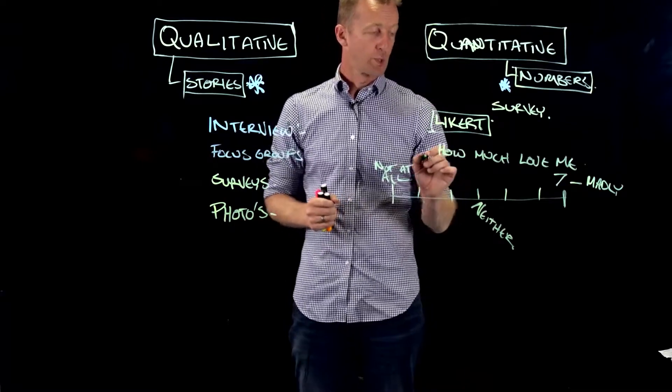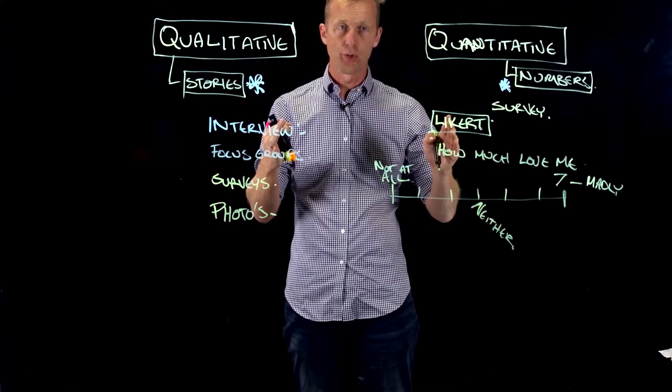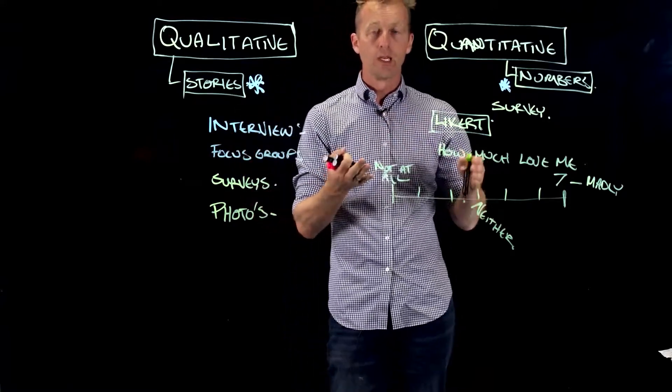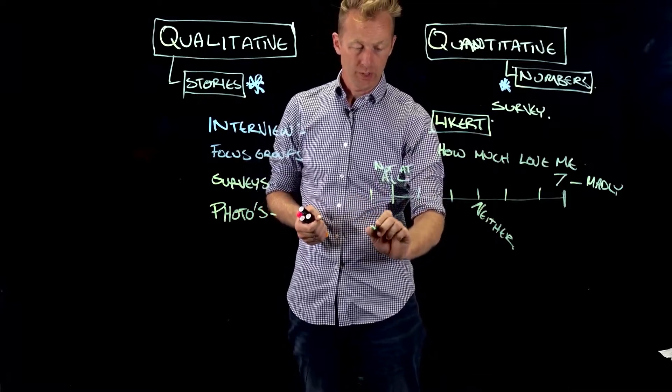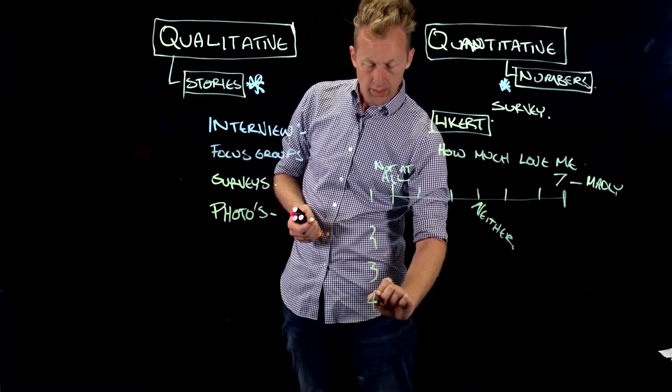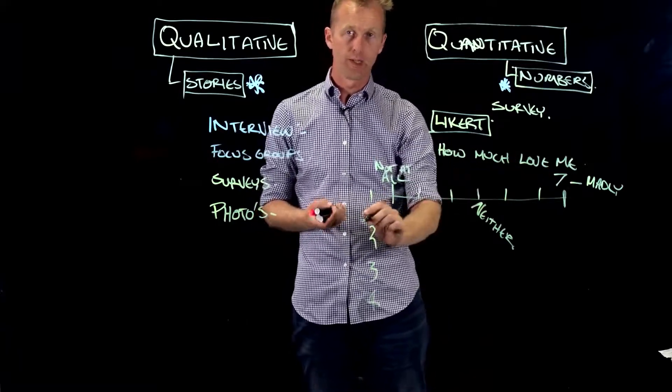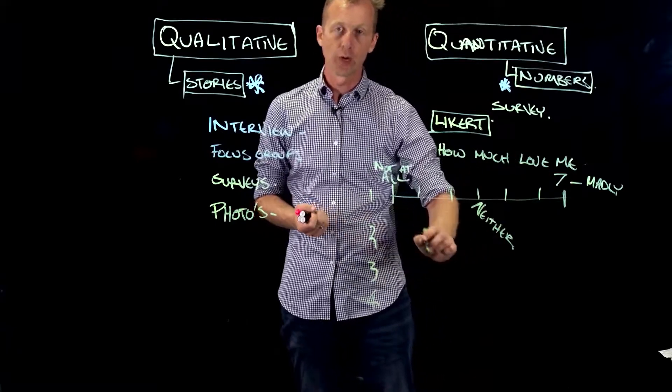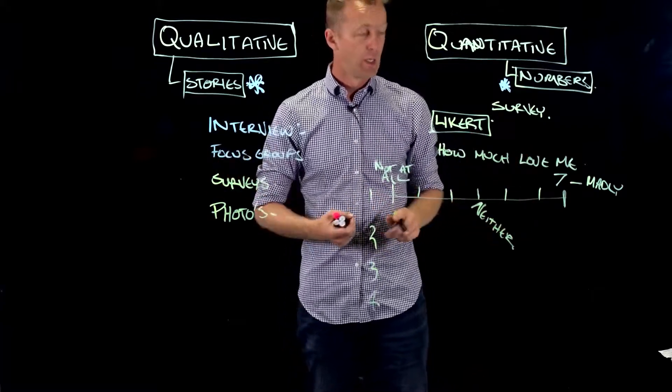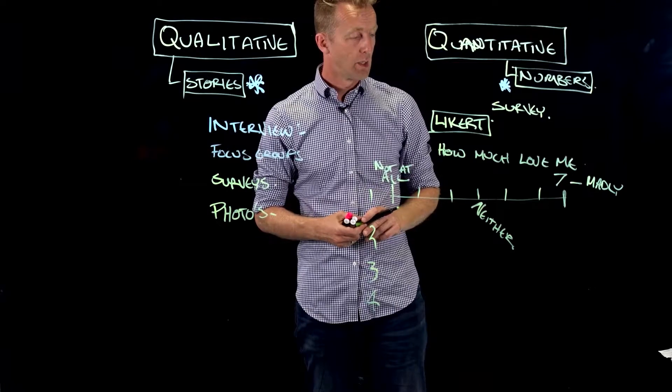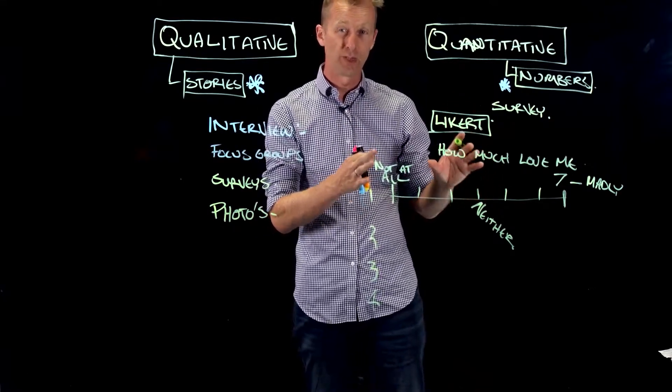So, Likert scales, what they'll do, particularly if you can apply the same set of questions to a series of events or a repeat event, is you'll be able to compare. So, you might have 10 questions. And then the total score, they might all be positive things. How good was it in this way? How good was it in this way? How good was it in this way? And then the total score gives you an indication, and you can compare that to other events.